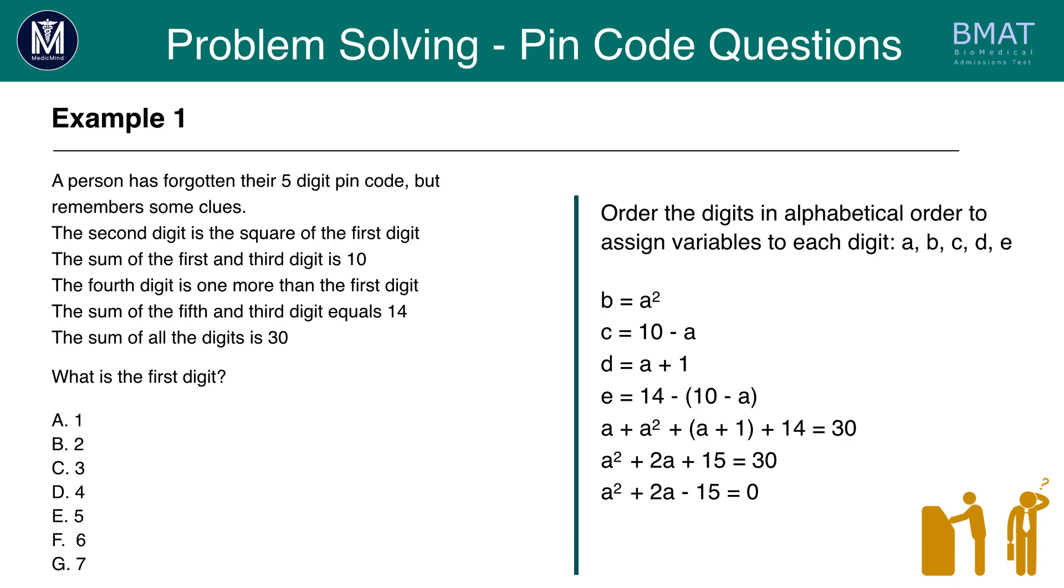Then we form our quadratic equation: A plus 5, A minus 3 equals zero. The two solutions here are A equals 3 and A equals minus 5. But the accepted first digit is 3. Therefore our answer is C, 3.